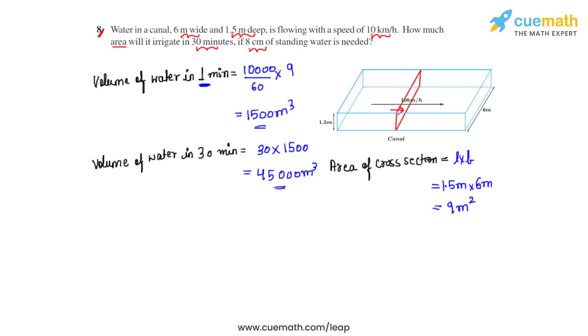The volume of water that flows in 30 minutes will be equal to the area that will irrigate in 30 minutes and will have water which is standing 8 centimeters tall. So we can write volume of water in 30 minutes equals area times 8 by 100. We have converted 8 centimeters into meters, so here we substitute it as 45,000 to be equal to area which is A times 8 by 100, and on calculation we get the answer as area to be equal to